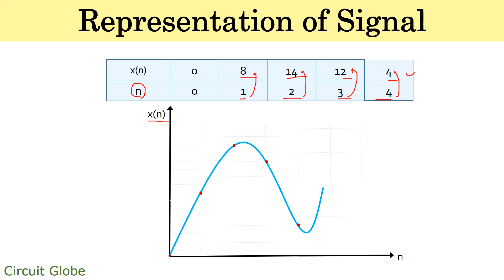The representation of this signal is shown graphically here. The y-axis represents x[n], that is the share value of the stock, and the x-axis represents n, the number of days. The scale on the x-axis shows 1, 2, 3, and 4, while the y-axis shows values 8, 14, 12, and 4. This gives you the idea of representing a signal with a set of discrete data which shows specific information. Here we have both the tabular representation and the graphical representation of the signal.